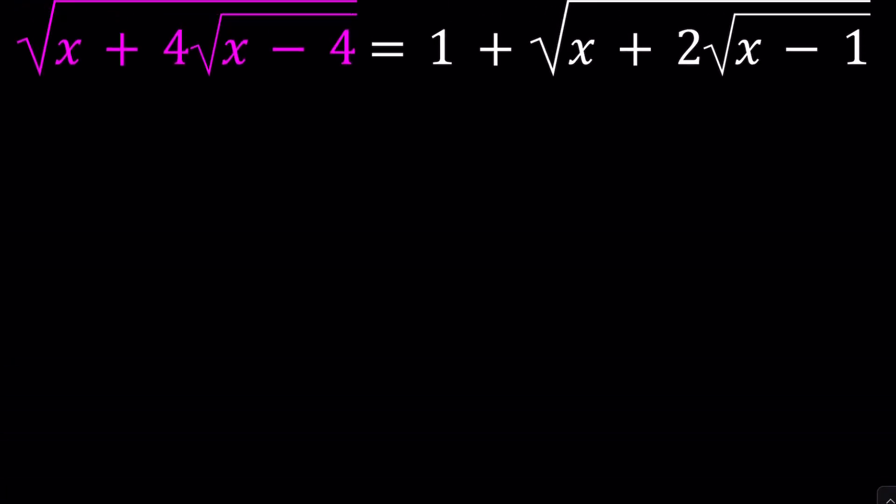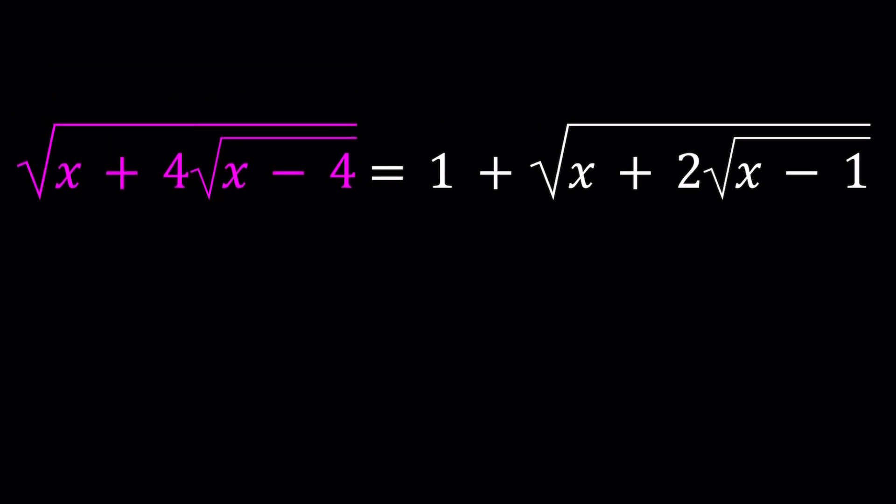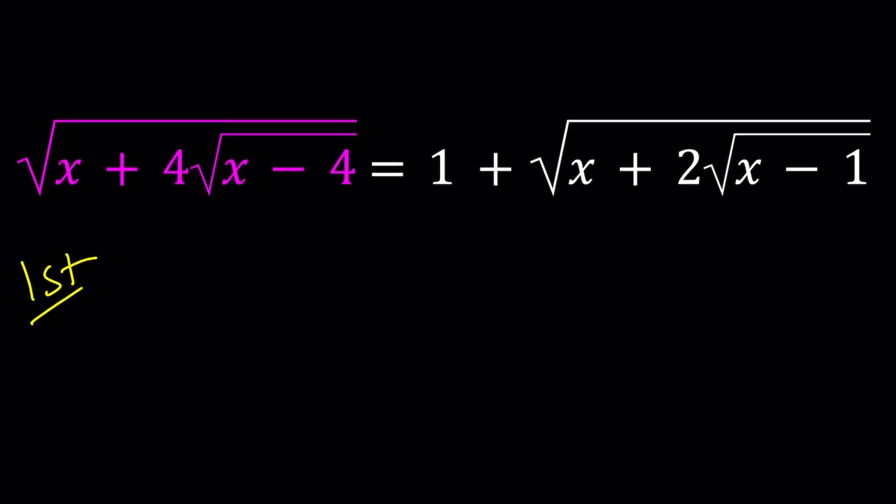Ready? So let's go ahead and do the following. We have two radicals, right? And they're on different sides. So that would make sense for our first method. I think it would make sense if we squared both sides. Don't you think? Because we will get rid of some of the radicals at least.